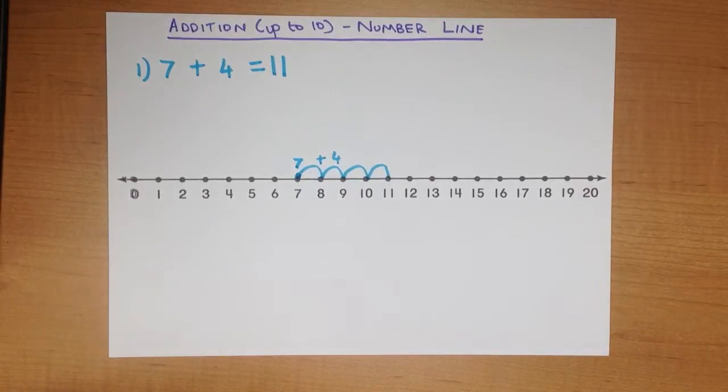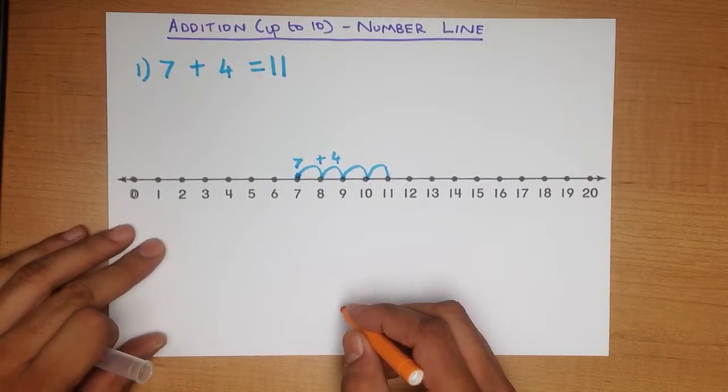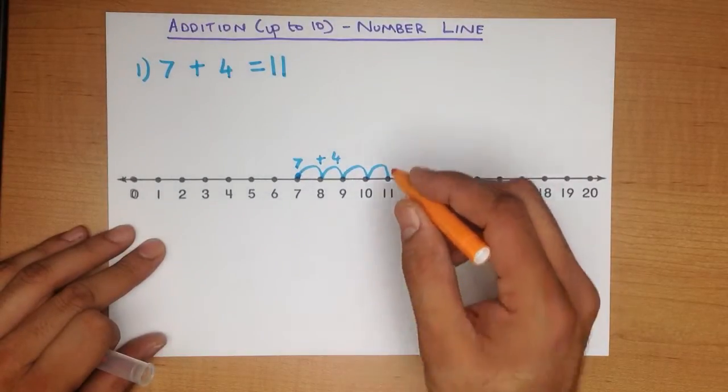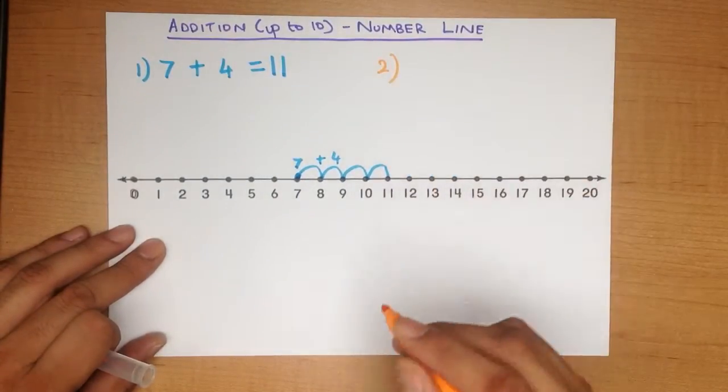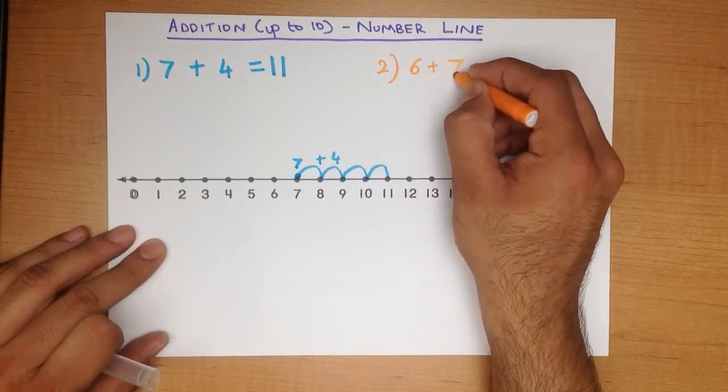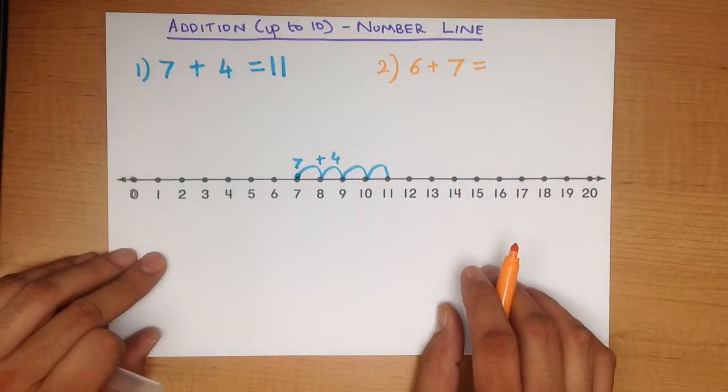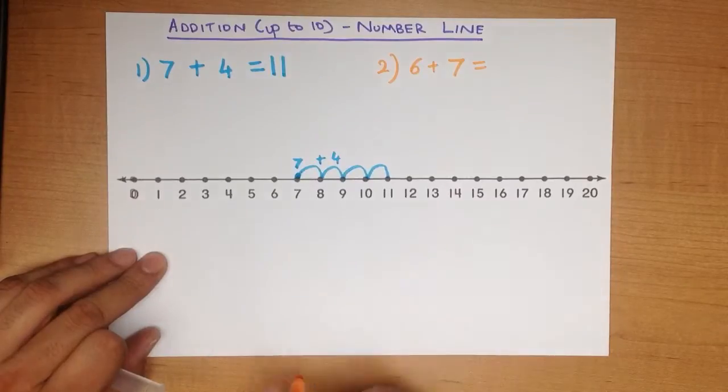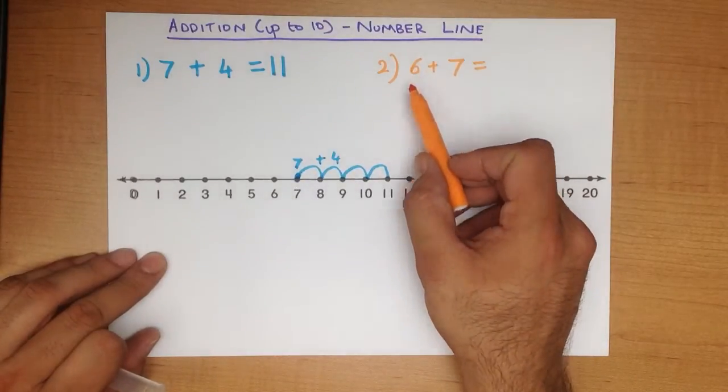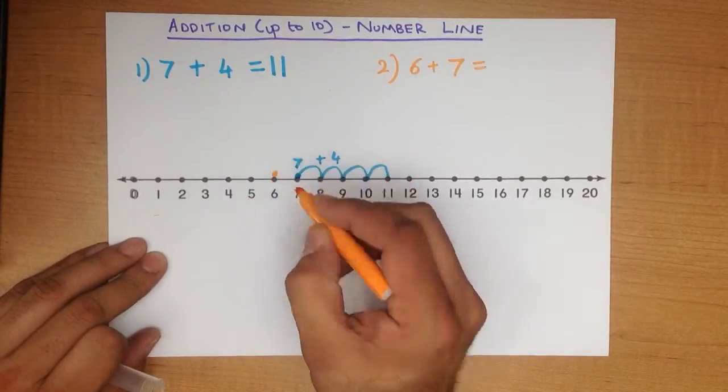Let's work through a different example. I'll use a different colored pen for this one. What is 6 plus 7? Using the number line, we find the first number. Here it is, 6.